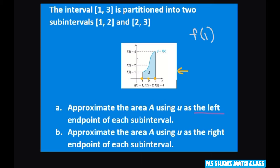For the left endpoint, we're going to use f of 1 and then f of 2. If we're using the right endpoint, we're going to start at f of 2 and then use f of 3.